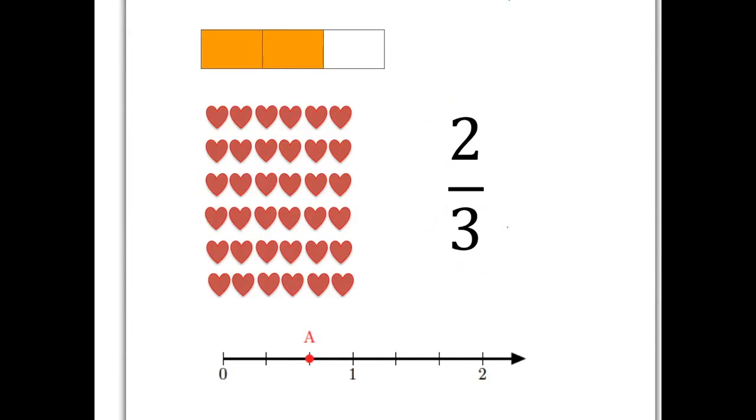What does two-thirds mean? Well, it means that you have taken something, some whole unit, divided it into three equal pieces and taken two of them.